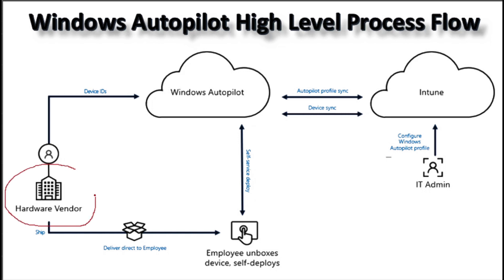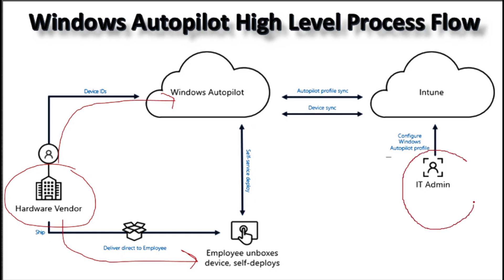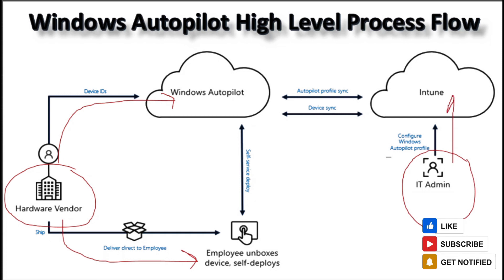The very first one is the hardware vendor, who is uploading the hardware hash to Windows Autopilot services either via OEM APIs or via the Partner Center portal, and then they are going to ship the device directly to the end user. The second key player is the IT administrator or the Intune administrator, who is going to configure the Autopilot deployment profile in the Intune console.